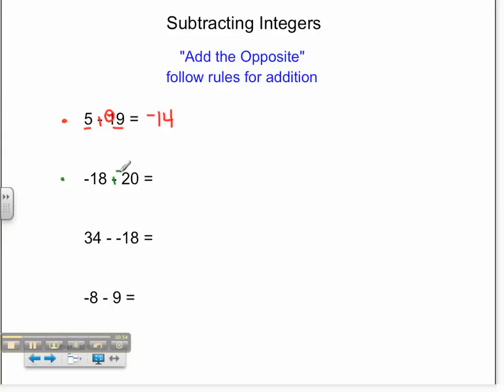My addition rules tell me when my signs are the same, I add my values, 18 plus 20 equals 38, and I keep my signs. My difference then is negative 38.